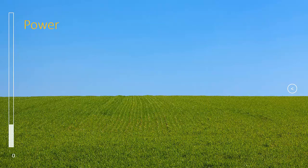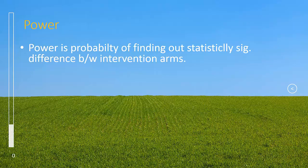Now what is power? Power is probability of finding out statistically significant difference between two intervention arms. Usually power is said to be 80% or higher.